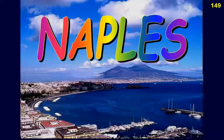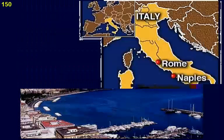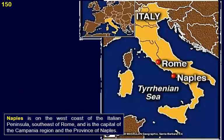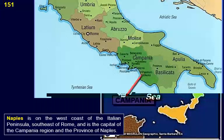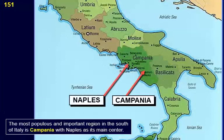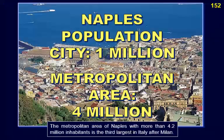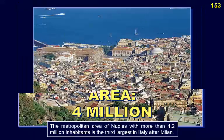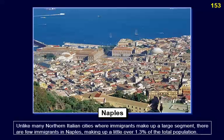Naples is on the west coast of the Italian peninsula, southeast of Rome, and is the capital of the Campania region and the province of Naples. The most populous and important region in the south of Italy is Campania, with Naples as its main center. Naples is the largest and most prosperous city in southern Italy, with a population of about one million. The metropolitan area of Naples, with more than 4.2 million inhabitants, is the third largest in Italy after Milan.